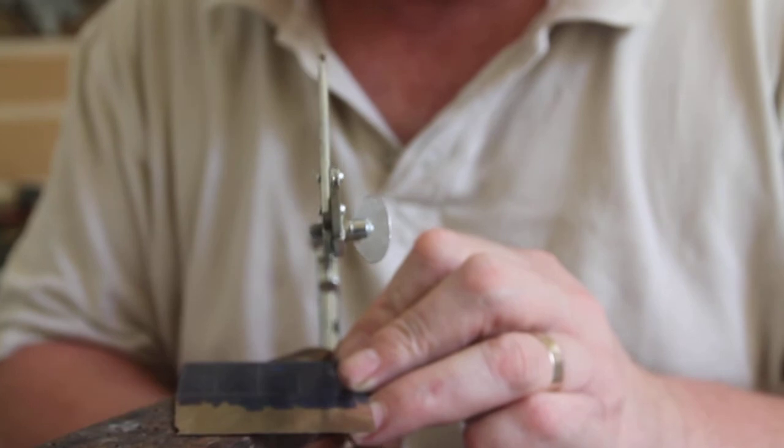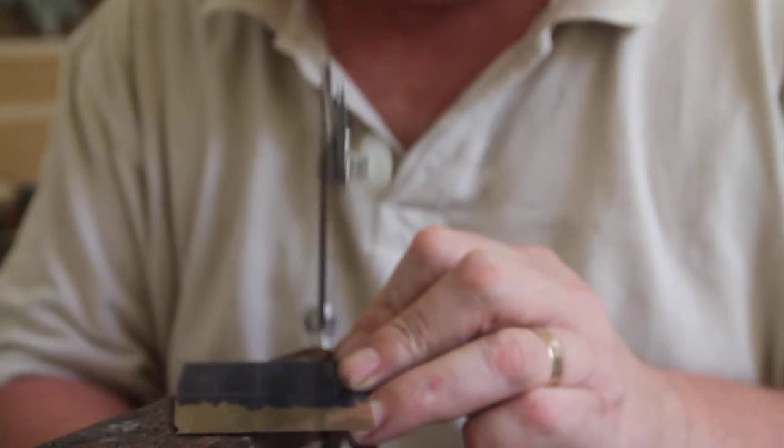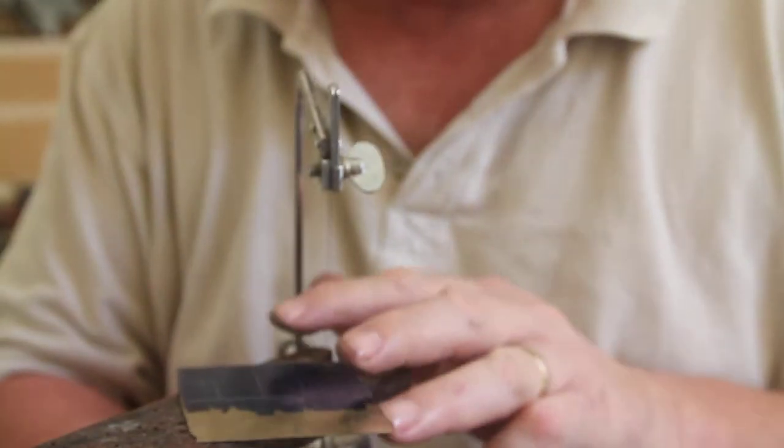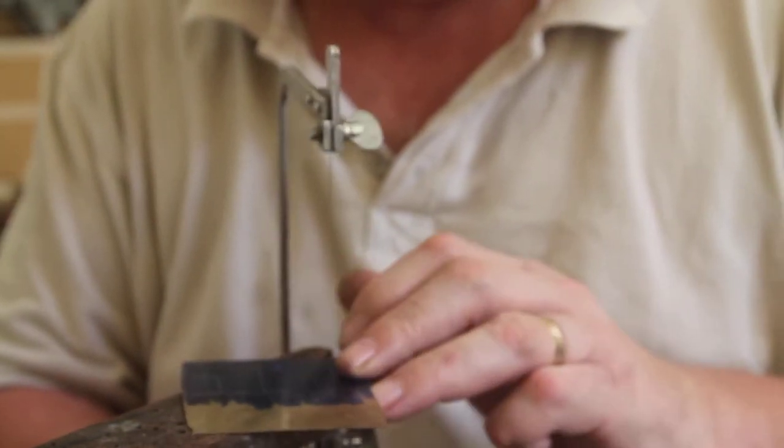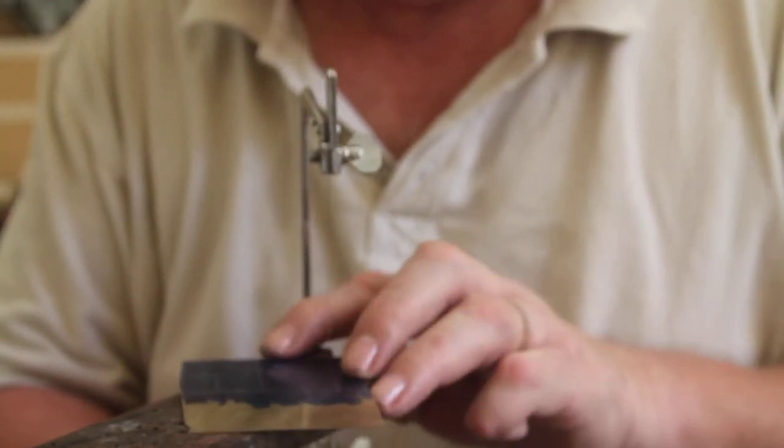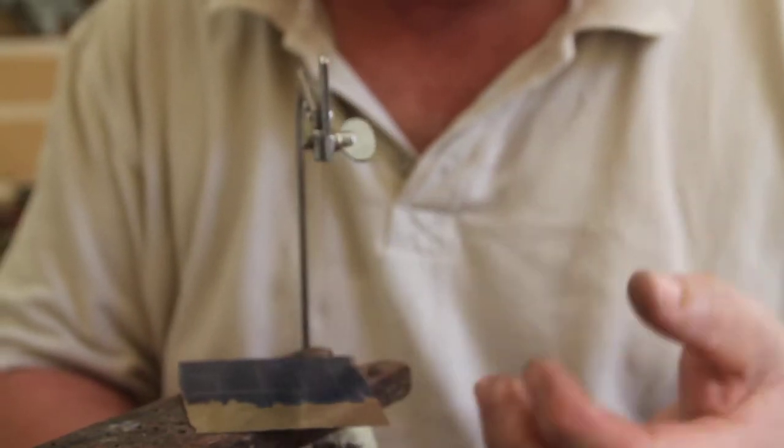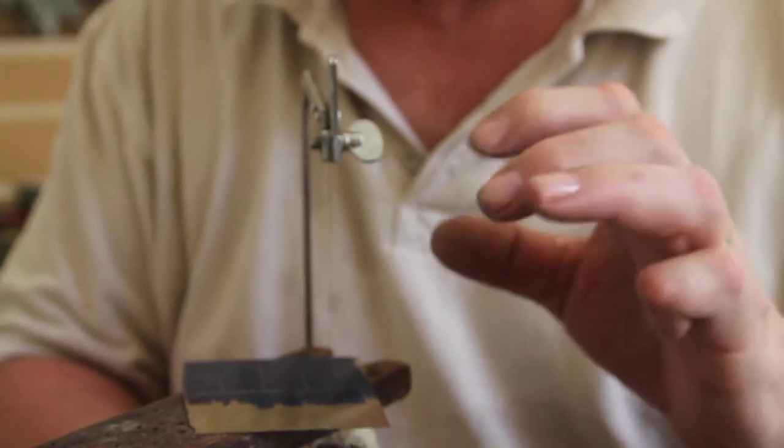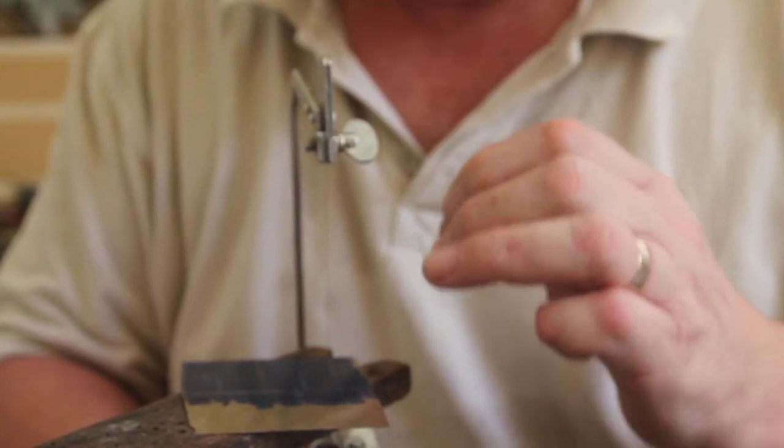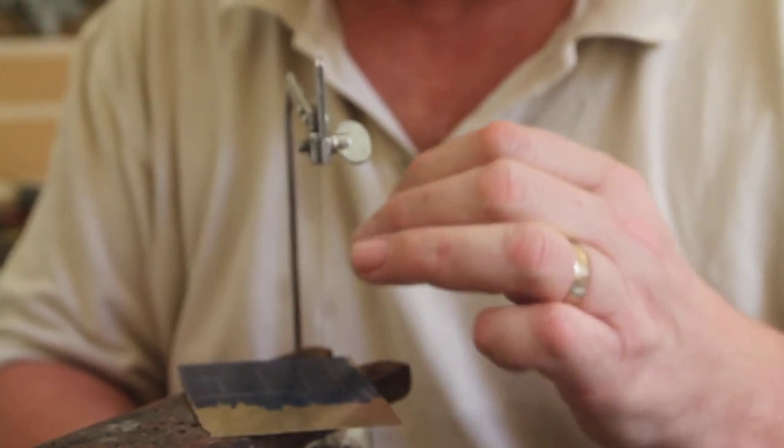I start off leading the saw forward and hopefully if the teeth aren't too far apart you can saw vertically without having the saw biting. If the saw bites when you're sawing vertically it generally means that the teeth are too far apart for the sheet so you need a saw blade with smaller teeth.